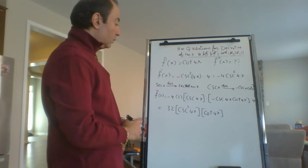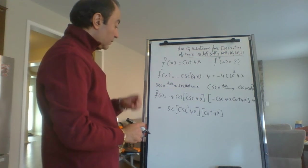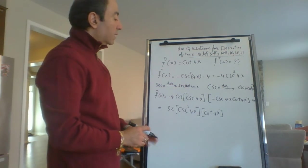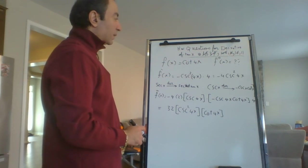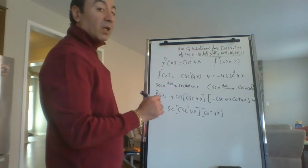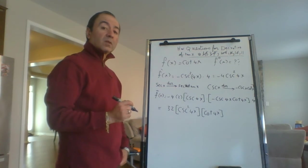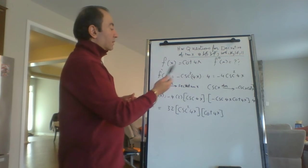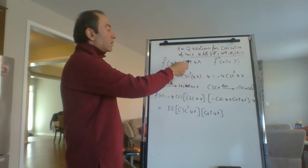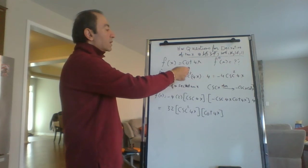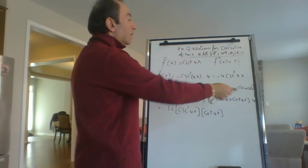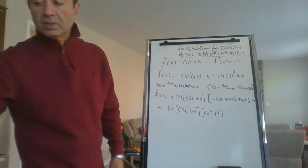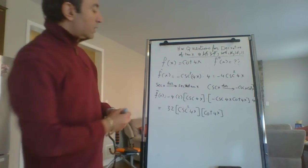If you want to switch everything to sine and cosine that's fine — cosecant squared is 1 over sine squared and cot is cosine over sine — but up to here you did a great job. I want to remind you of some shortcut rules: you don't have to switch cot to cosine over sine or cosecant to 1 over sine every time. Try to remember those derivative rules as shortcuts.